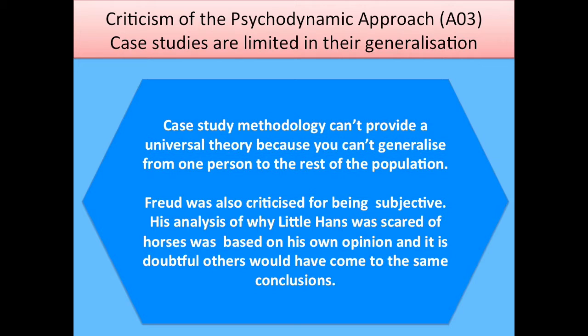The second evaluation point is a criticism of the psychodynamic approach and it criticises the case study methodology. It says it's very difficult to come up with universal theories like the Oedipus/Electra complex theory through the case study approach because you're only looking at specific individuals. In the case of the Oedipus/Electra complex theory, Freud just did a case study on one child called Little Hans, who he only met once, and actually interacted with the child's father who was a Freudian. It was recognised that perhaps Freud was overly subjective, putting his own opinion onto the experiences of Little Hans to come up with the Oedipus/Electra complex. So the second evaluation point criticises the research methodology.